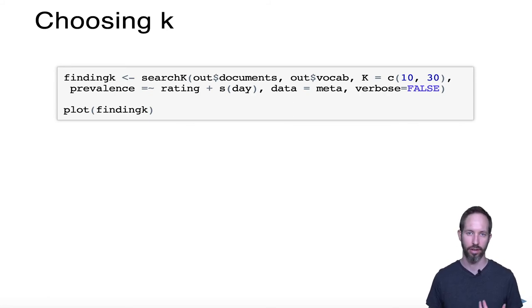Another really handy function is the search K function. Here we run a structural topic model again, just like we did before, but instead of specifying a single value of K, we can specify a range. So here we've specified a range of 10 colon 30, which would be every value between 10 and 30.